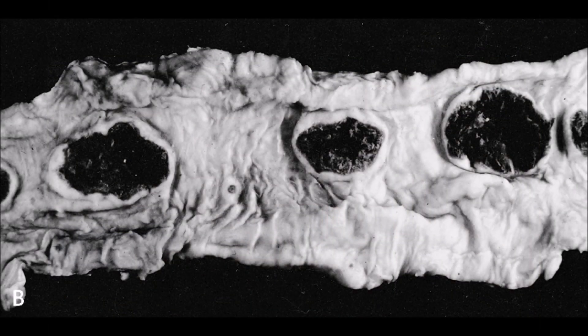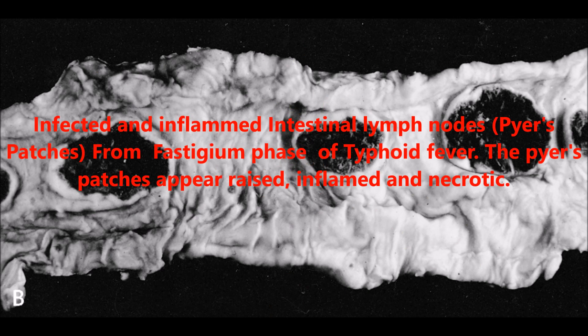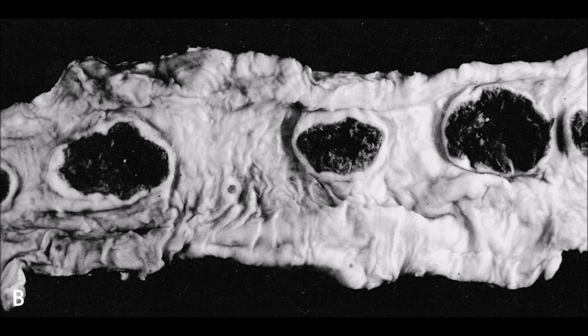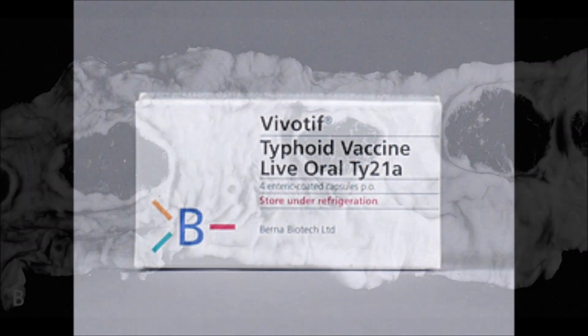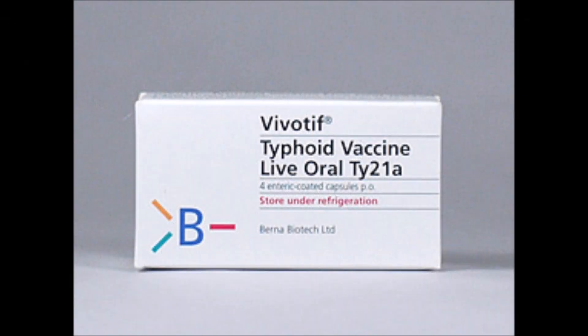Blood tests are also used to detect typhoid. Bone marrow aspiration — taking a sample from the patient's bone marrow — can also be used, though it is a very invasive and painful procedure. Ways to prevent typhoid include the typhoid vaccine, as well as proper handling of food and water treatment, proper heating of food, and proper sanitation, all of which help prevent the spread of typhoid.